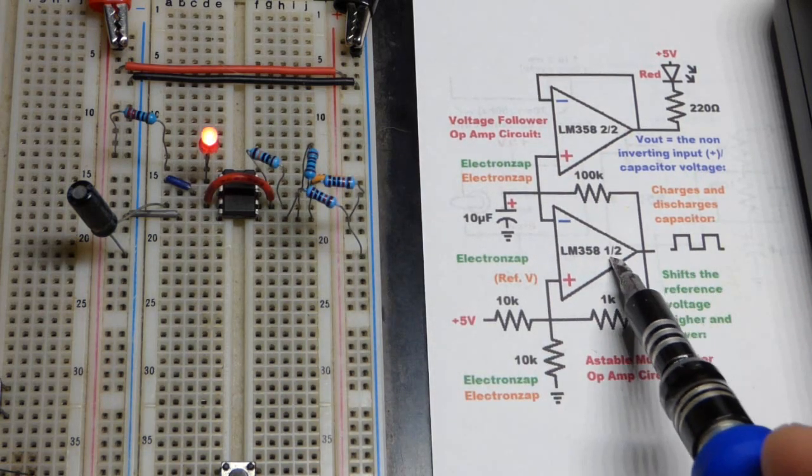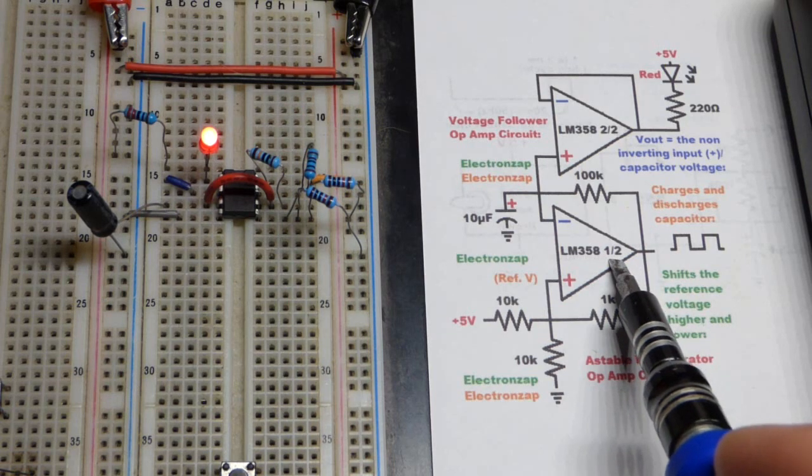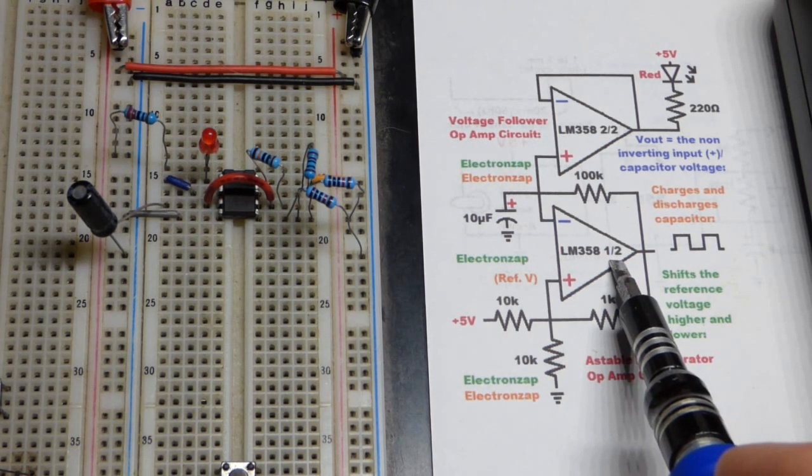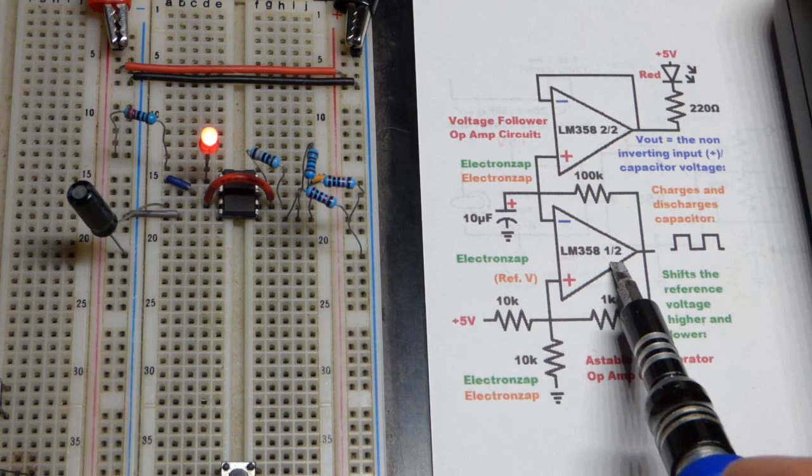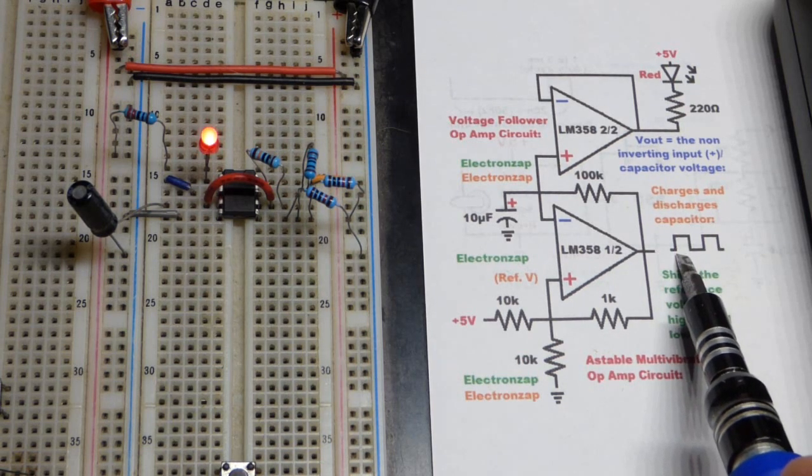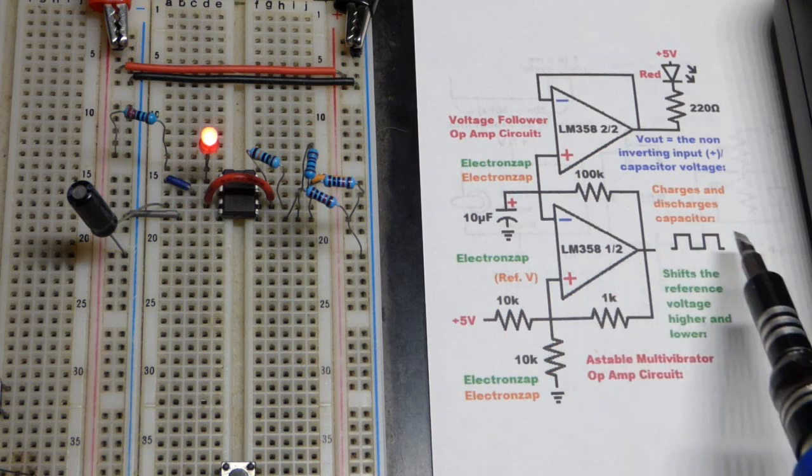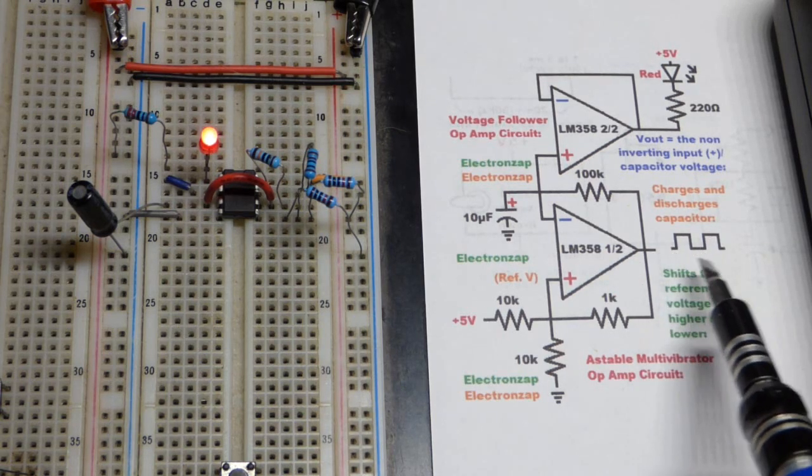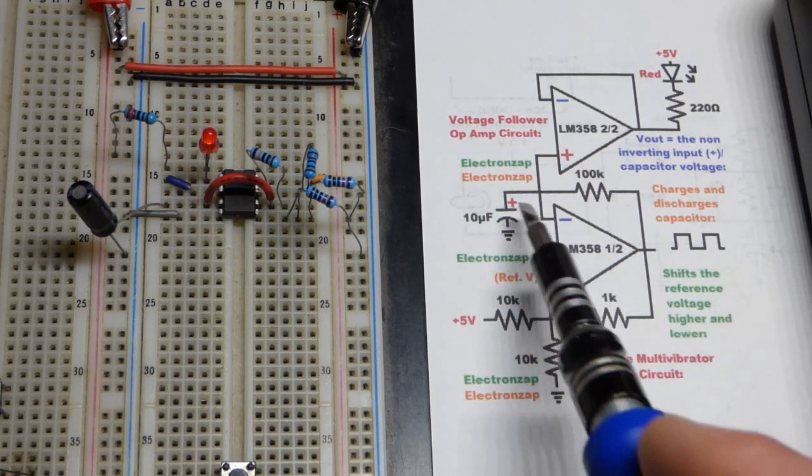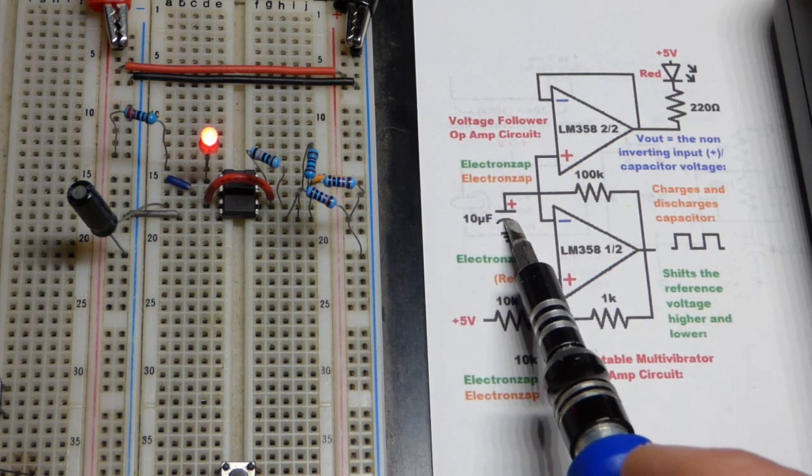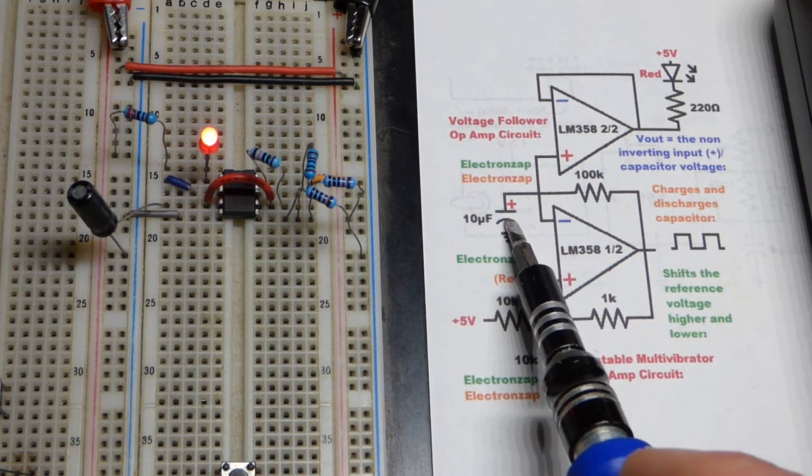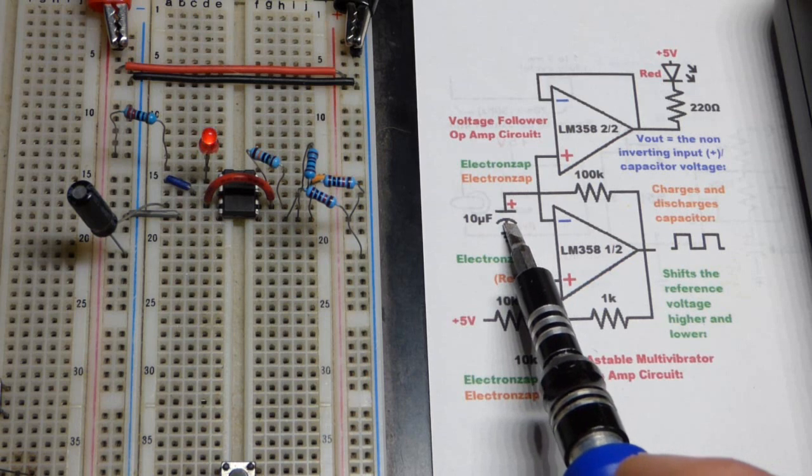So we have basically an A-stable op-amp here. Last video we used an A-stable 555 timer, basically doing the same thing. The output, which we're not using here either, keeps alternating between high and low forever. And that's due to a capacitor that is charging up to a certain voltage and then down to a certain voltage over and over,